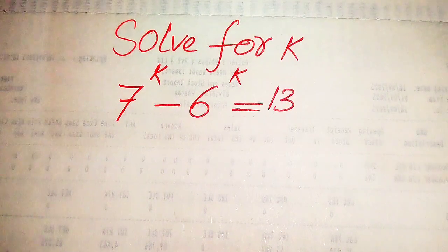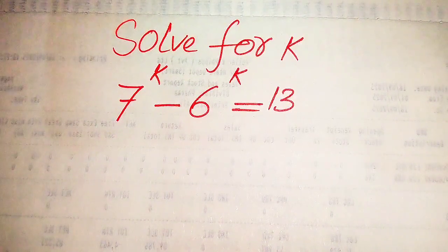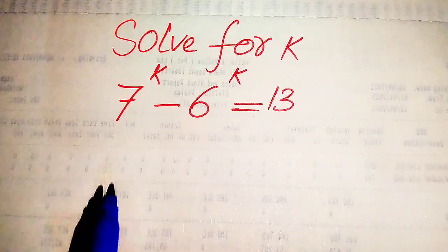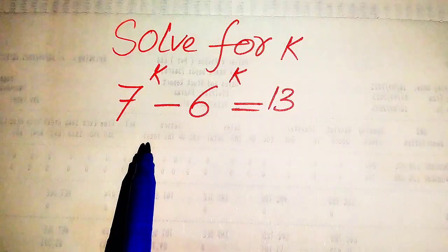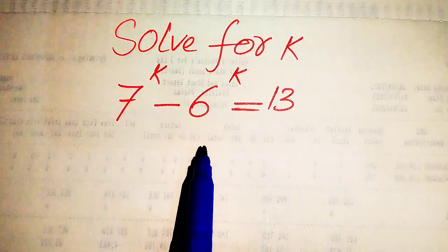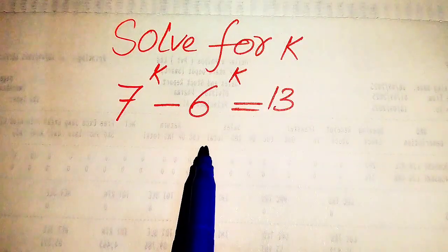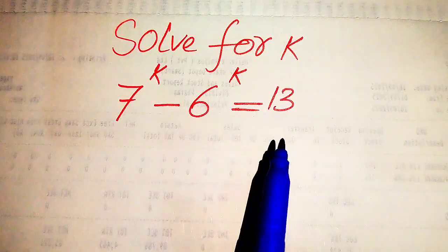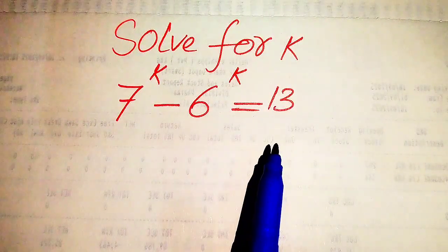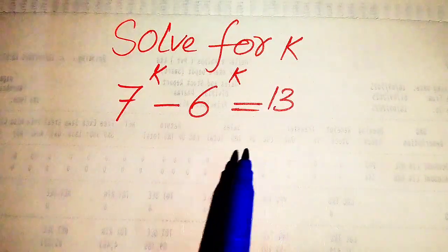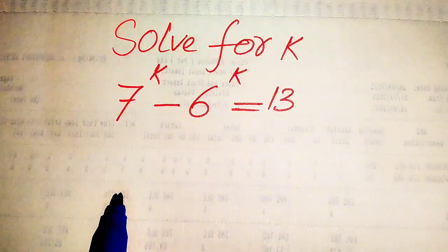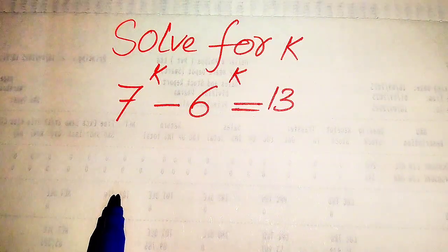Hello everyone. How to solve this problem: for what values of k is 7 to the power of k minus 6 to the power of k equals 13? We will solve this problem for all values of k.